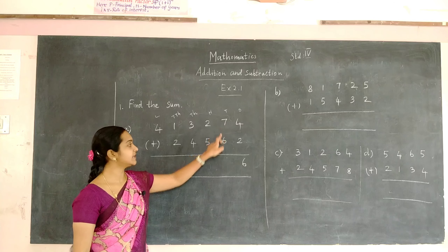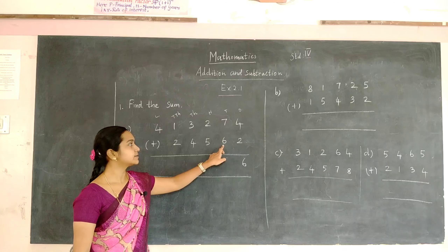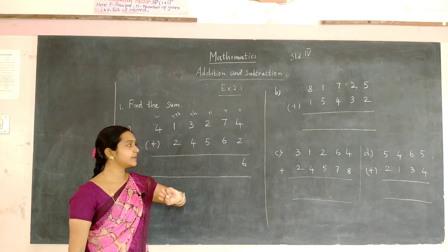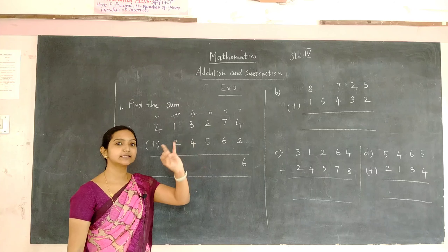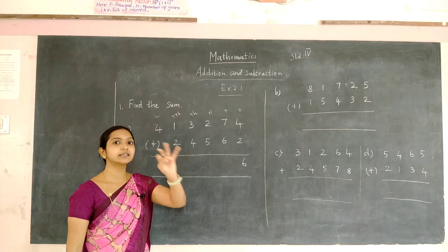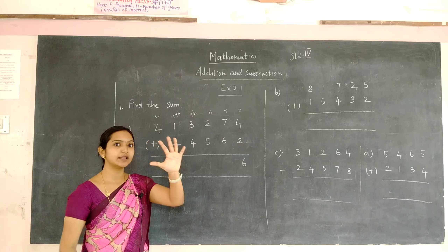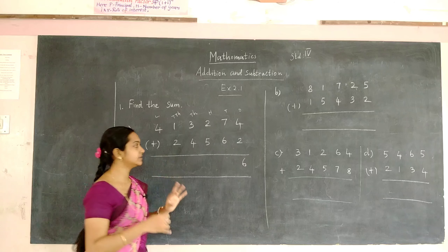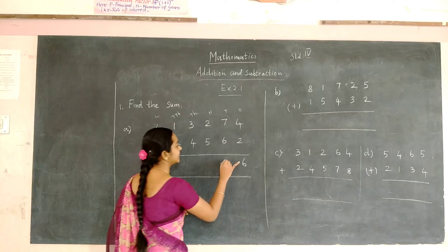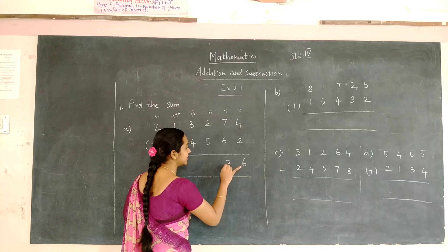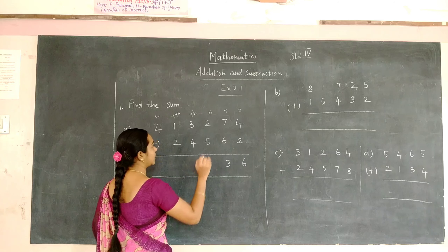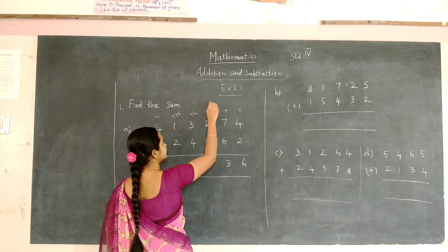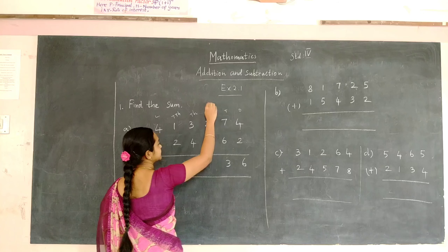To 7 you have to add 6. That will be 8, 9, 10, 11, 12, and 13. So write 3 here and 1 will be carried to the 100's place.